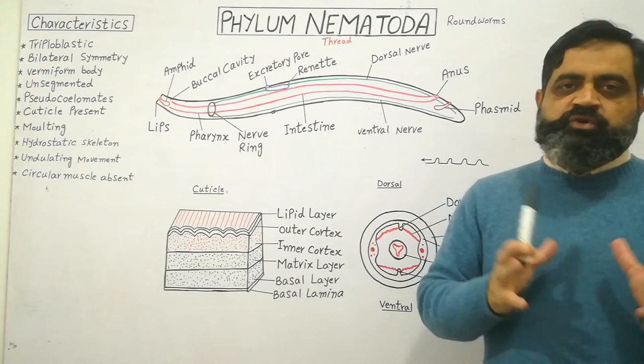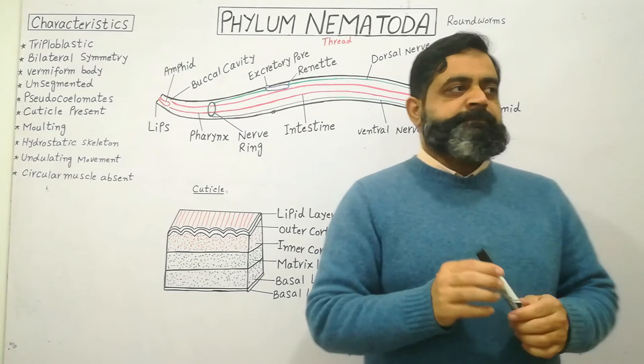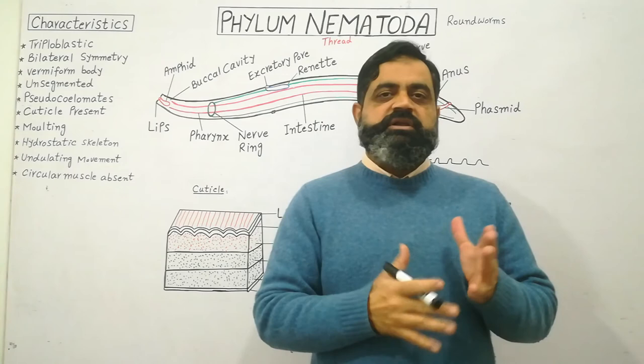These animals have a well-developed nervous system. They also contain bristles, amphids, and phasmids which help in the reception of different types of chemicals and stimuli from the environment.